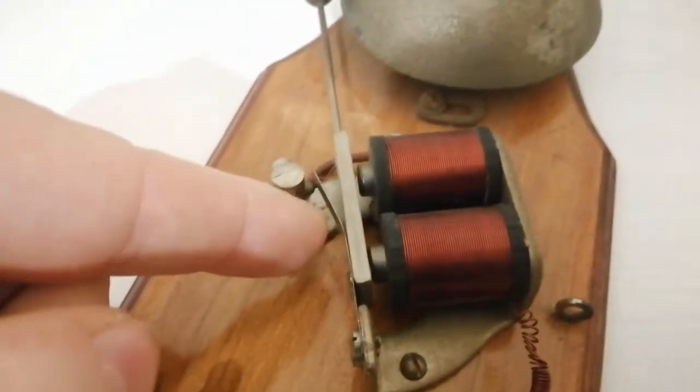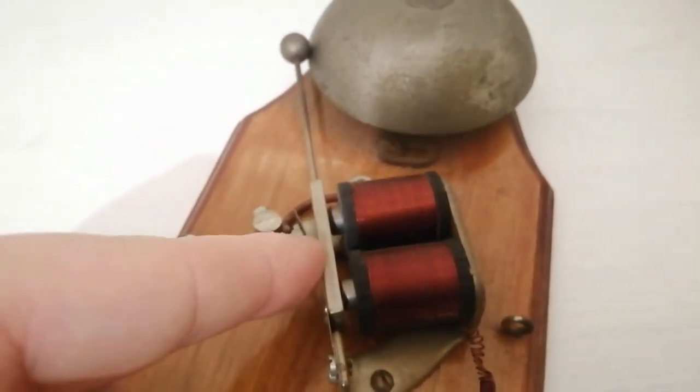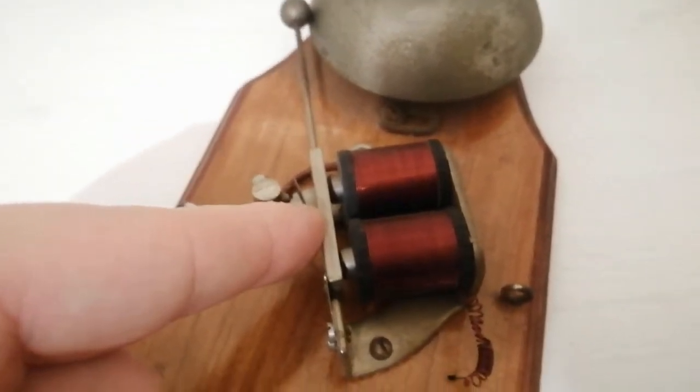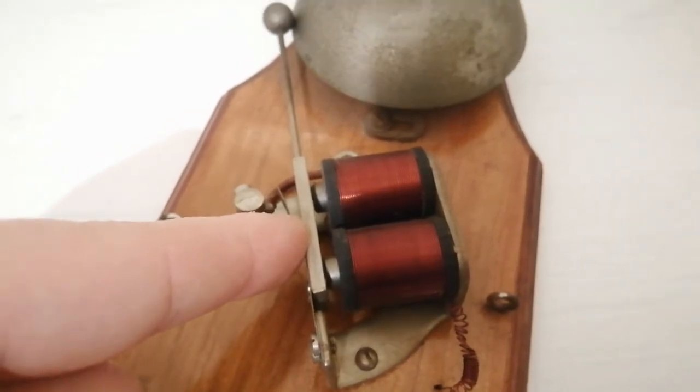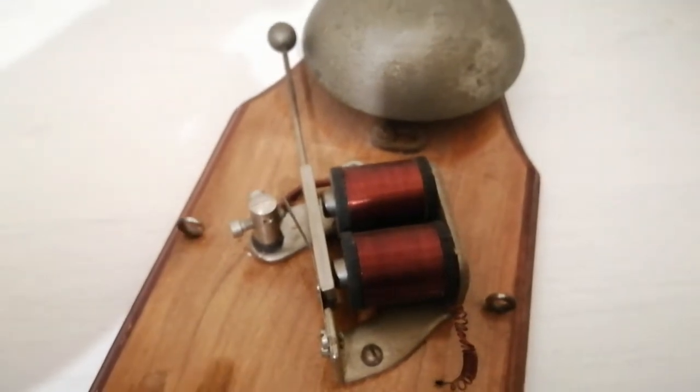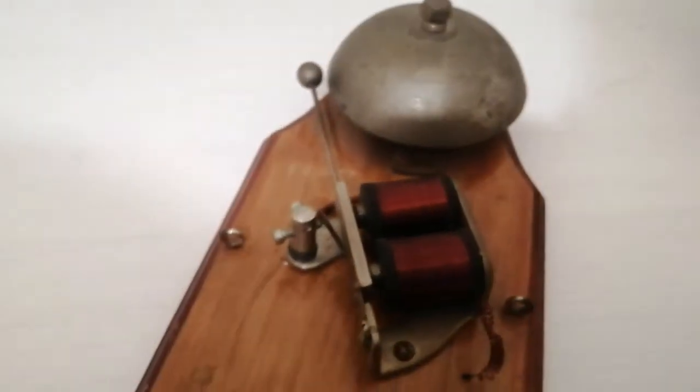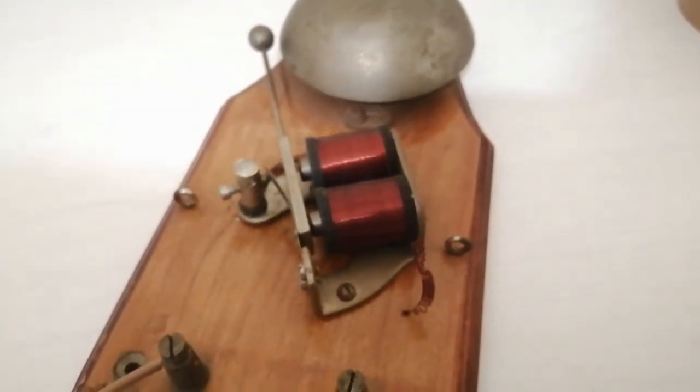So when this electromagnet attracts the metal bar to itself, it dings the bell but breaks the circuit. And because it breaks the circuit, the magnet no longer works. So the bar resets itself and it makes contact with a pin, again completing the circuit. And it just keeps doing that basically until you turn the power off or the electrical current is no longer flowing through that electromagnet.